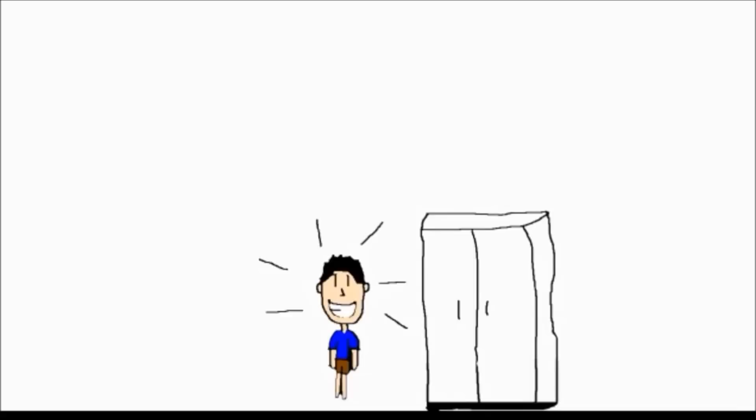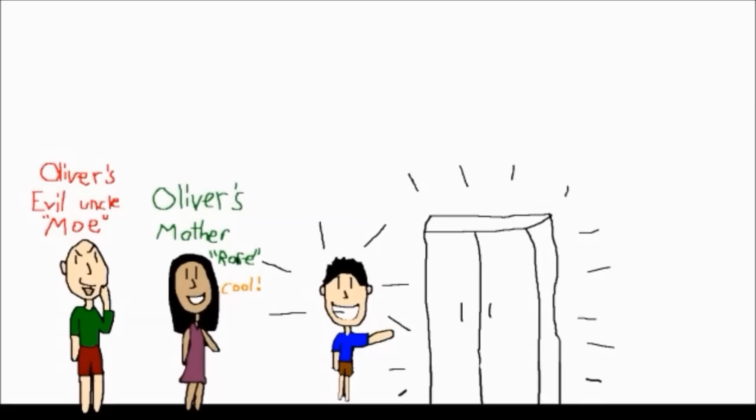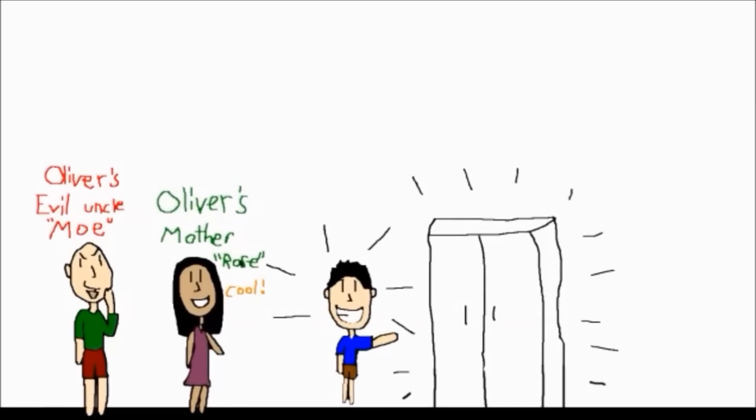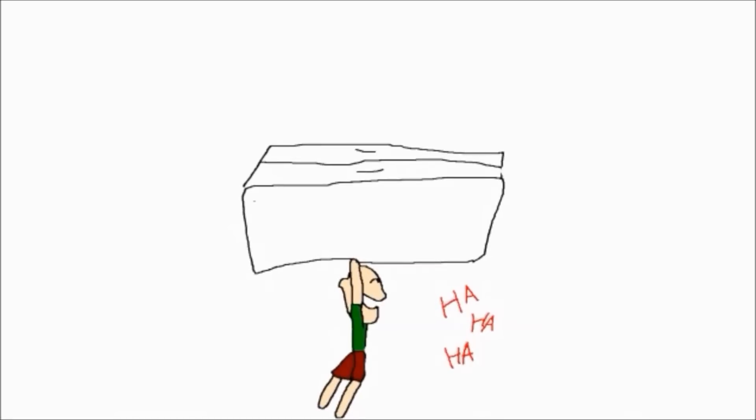He first wanted to show his family, and then he would put a patent on it later. His evil Uncle Mo had other ideas, however. He stole Oliver's invention, and he ran off.